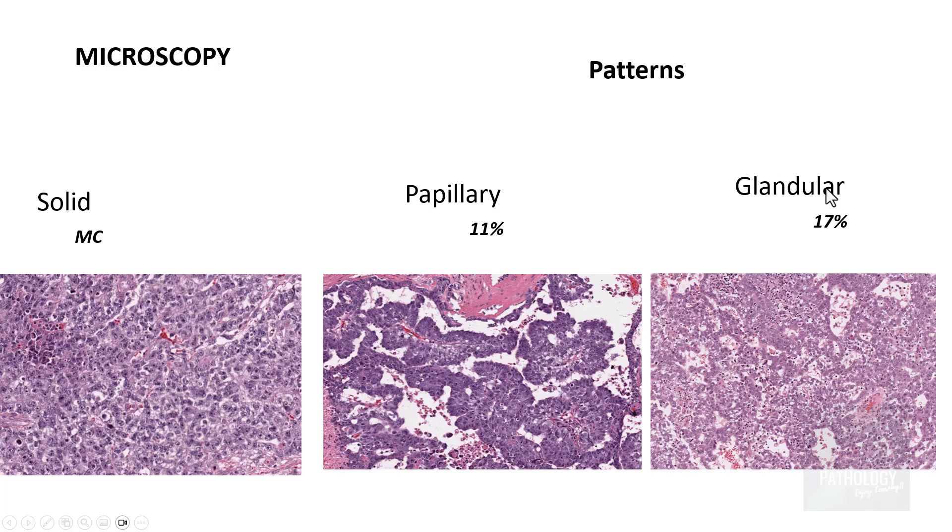The next common pattern is the glandular pattern which accounts for around 17 percent of cases where tumor cells are arranged in ill-formed glands. And the next most common pattern is the papillary pattern accounting for around 11 percent of cases where you find tumor cells are arranged in the form of papillae with central fibrovascular core.